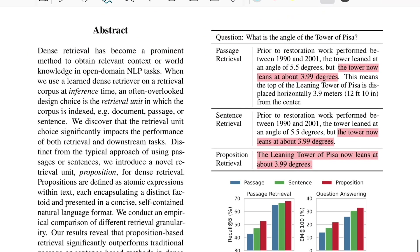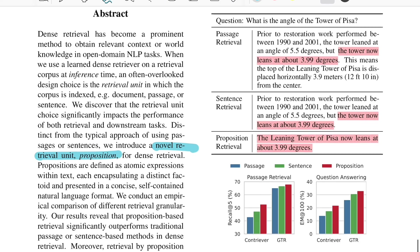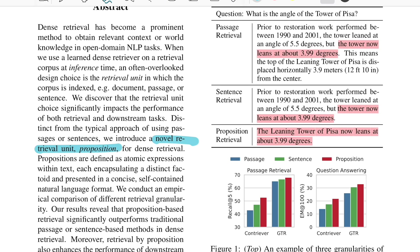In this paper, what they propose is a novel retrieval unit which they call propositions. The paper specifically says that if you use propositions as your retrieval units or chunk units, and if you're doing dense retrieval based on embeddings and some sort of similarity measure to calculate closeness, they significantly outperform traditional passage or sentence-based methods — and that too for both retrieval and question answering.